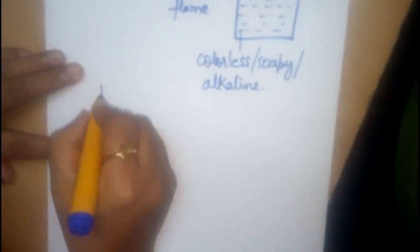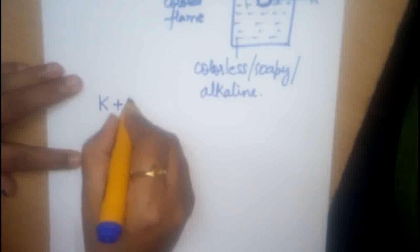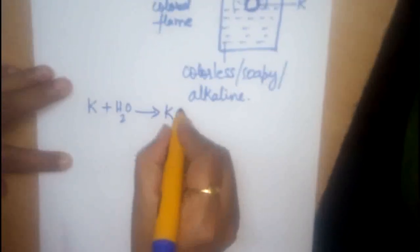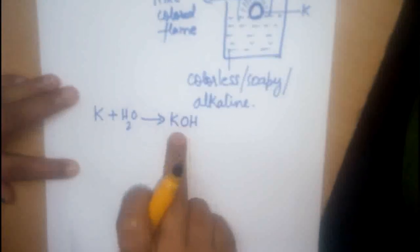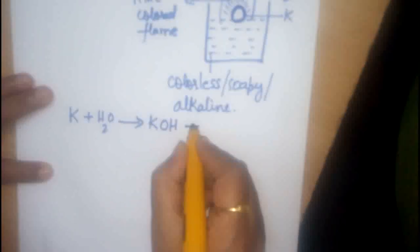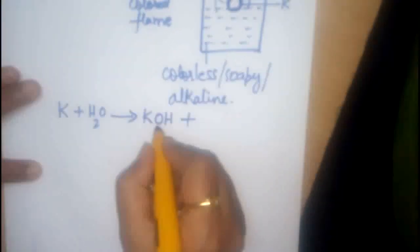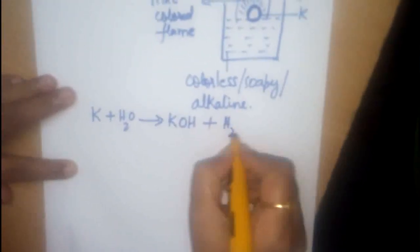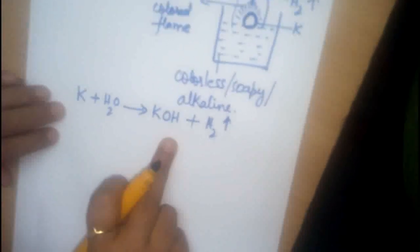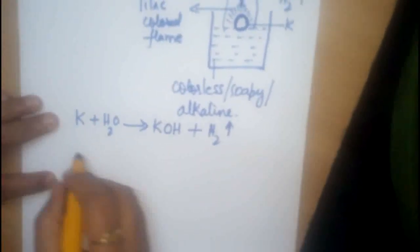Now, let us see the reaction. Potassium plus water, it forms, yeah, this is what is the colourless soapy alkaline solution that is KOH, also called as potash, caustic potash. And hydrogen gas is evolved. It is not balanced, you can balance it later.